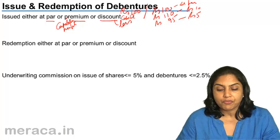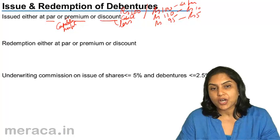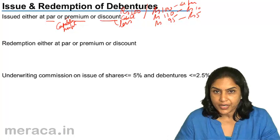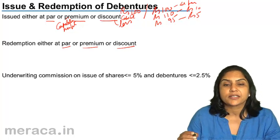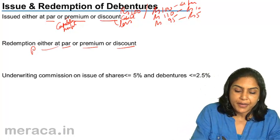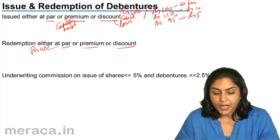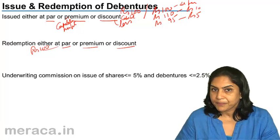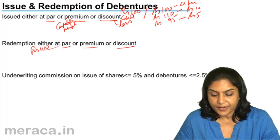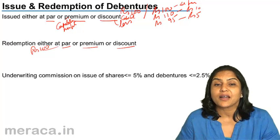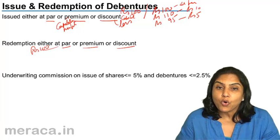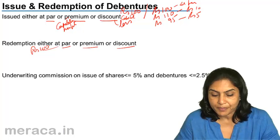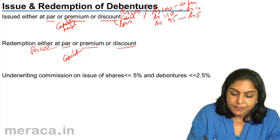At the time of issue of debentures, the terms of redemption are also specified. Redemption could be at a particular date, after a particular period of time, and such redemption again may be at par, at premium, or at a discount. At par would mean that a Rs. 100 debenture is being repaid for Rs. 100. If a debenture is being redeemed at a premium, it means that a debenture with a face value of Rs. 100, the company would have to pay the debenture holder Rs. 110, if the premium on redemption is 10%. So the company repays more than the face value of the debenture — that would be a loss. Premium on redemption becomes a capital loss.